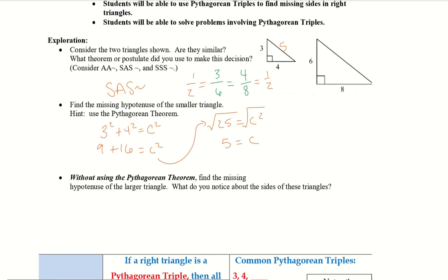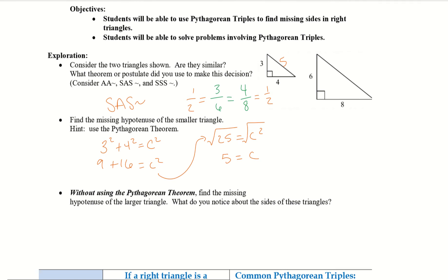It says, without using the Pythagorean theorem, find the missing hypotenuse of the larger triangle. What do you notice about the size of these triangles? So if we take a look at what we have here, 3 to 6, we're multiplying by 2. 4 to 8, we're also multiplying by 2. So there's a good chance if we take 5, multiply it by 2, I'll get 10. So the missing hypotenuse is 10. And it is twice the size.